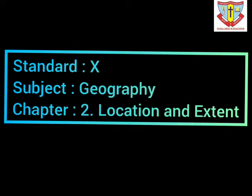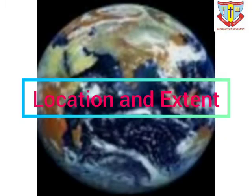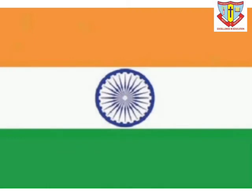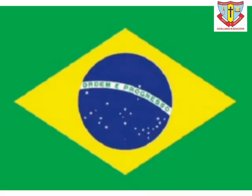Standard 10 Subject Geography, Chapter 2: Location and Extent. Let's start our geography class. We will learn Chapter 2 Location and Extent. We all live on this earth, and in geography we study nature, its events, and the relationship between biotic factors and the environment. In this chapter, we are going to study about our country India's location and extent, with a comparison to Brazil.